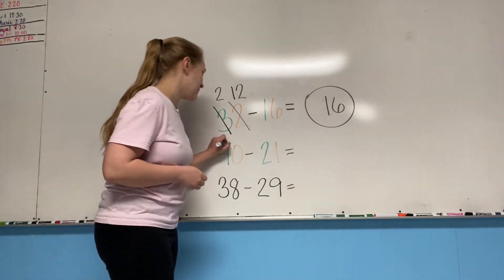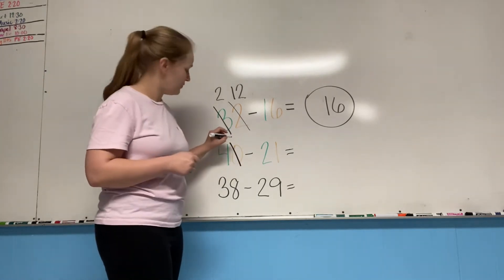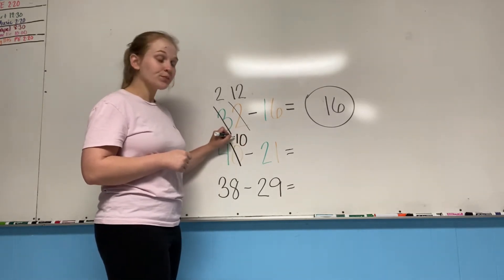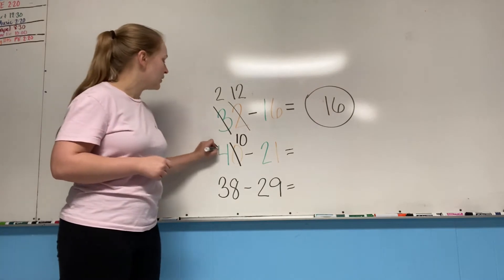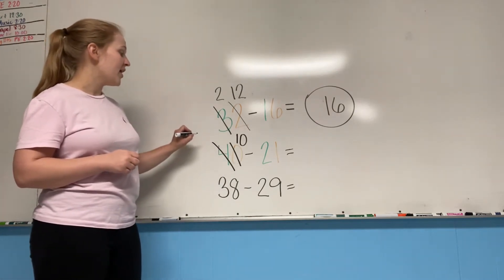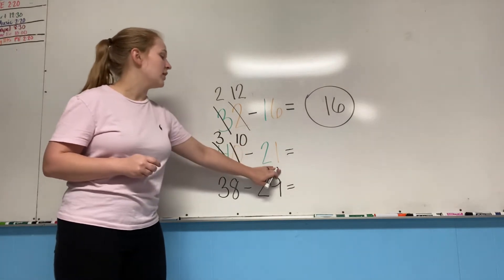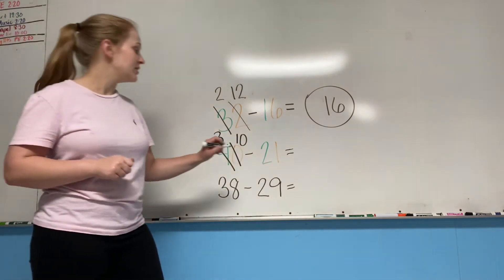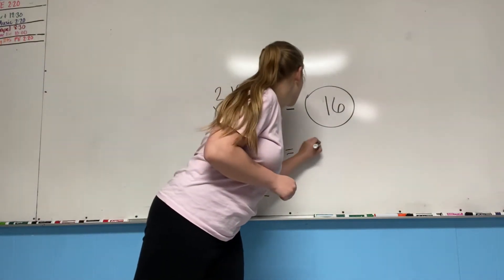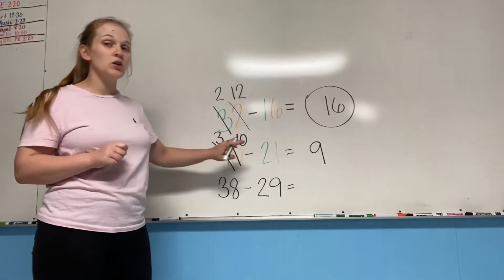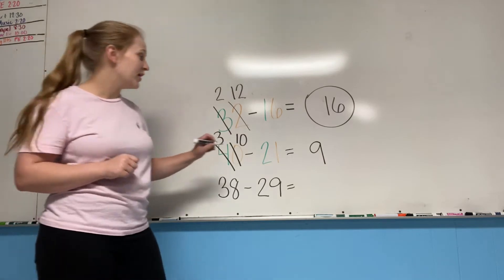So our zero becomes a 10. Very good. Now, where did we get this one? We got it from the four, so four becomes a three. So 10 minus one equals nine. And three minus two equals one.